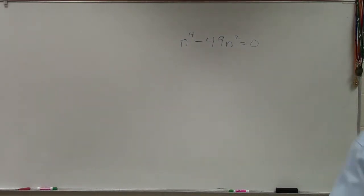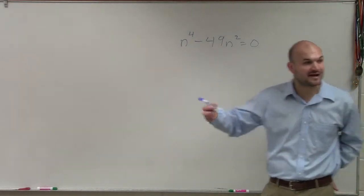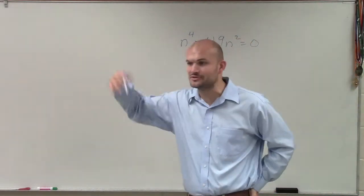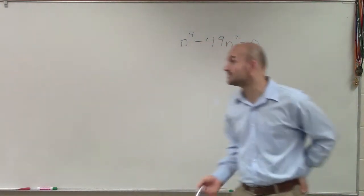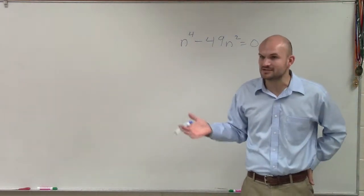All right, so in this case we have n to the fourth minus 49 n squared equals zero. Maybe you guys can see why factoring might come into play because as you're doing synthetic division, you might come up with another factor that looks something like this. Then it's like, well, how am I going to find all the remaining factors and zeros?